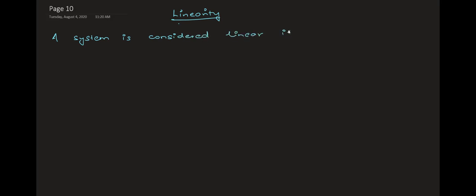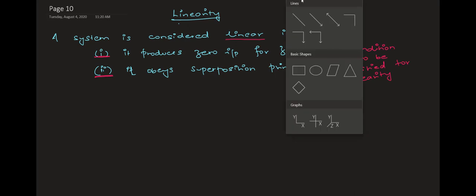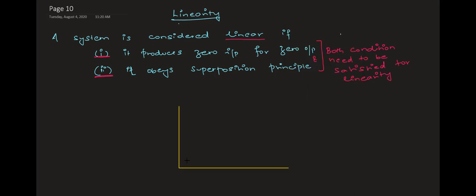A system is considered to be linear if it satisfies two conditions. The first is it produces zero output for zero input. And secondly, it obeys the superposition principle. Your system is linear only if both of these conditions are satisfied. If any one of the conditions is not satisfied, then your system is non-linear.